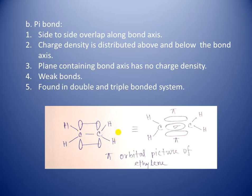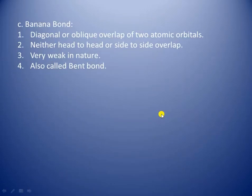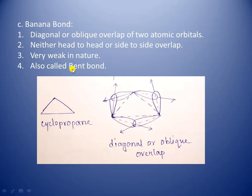Next comes the banana bond. A diagonal or oblique overlap of two atomic orbitals produces bent bond or banana bond. This type of overlap is neither head-to-head nor side-to-side overlap; it is intermediate between two types. The charge density along the bond axis is very minimum and hence banana bonds are weak.